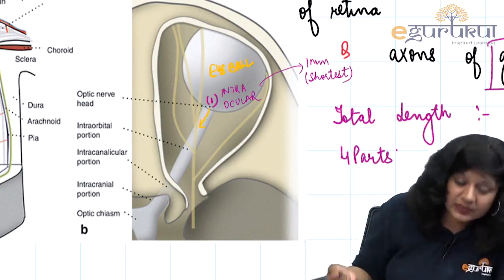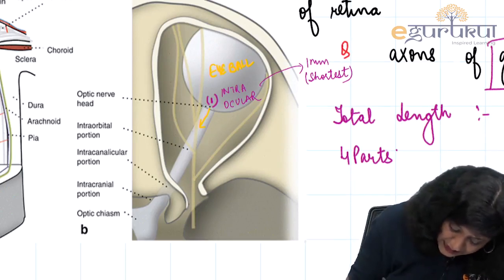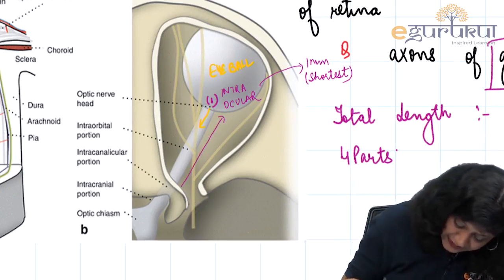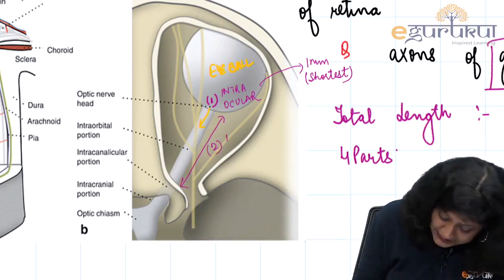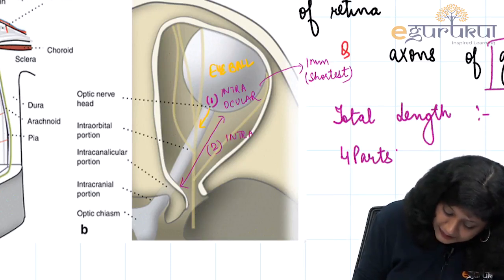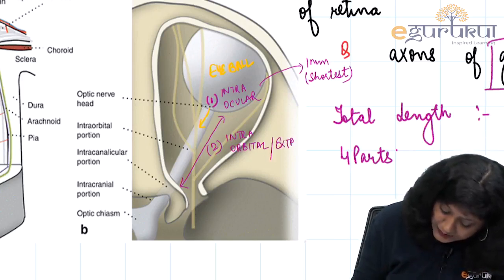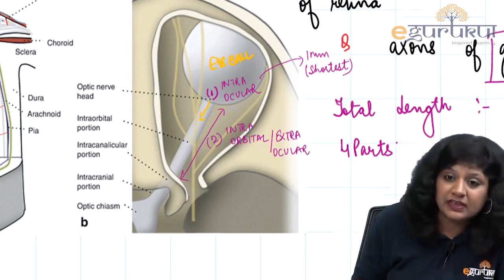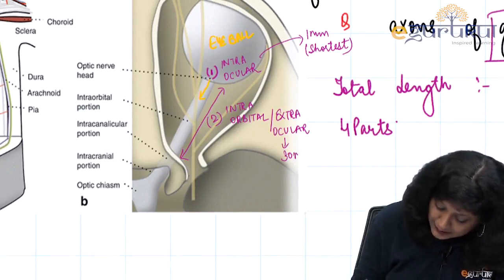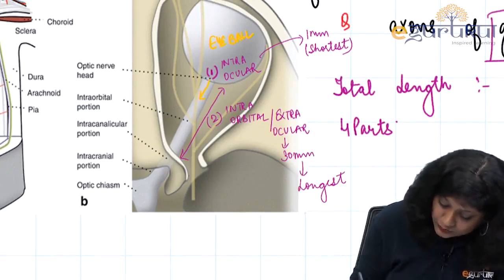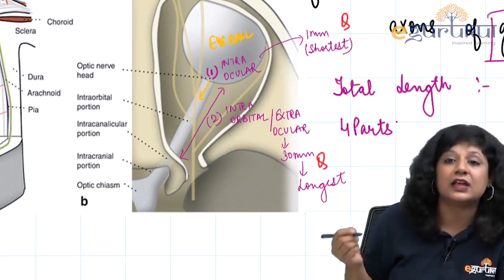The second part is lying inside the orbital cavity, called the intraorbital or extraocular part, and this part is 30 mm, making it the longest part of the optic nerve.